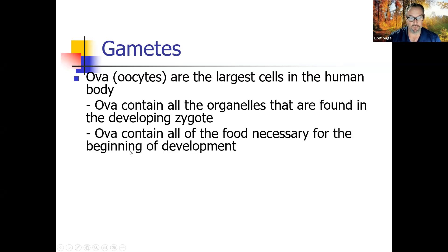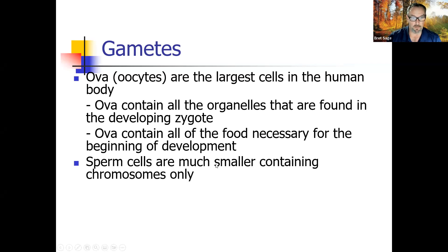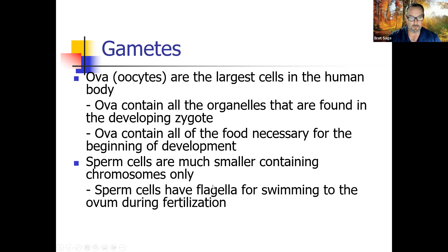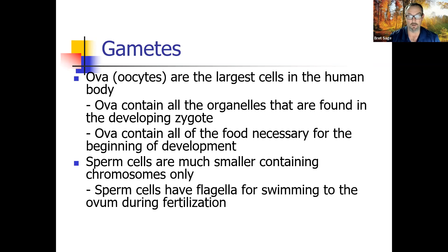Ova contain all the food necessary for the beginning of development — from release at the ovary until implantation in the uterus. Sperm cells are much smaller, containing chromosomes only, because they need to be light to swim upstream against the flow of uterine and abdominal fluid — very much like salmon swimming upstream to spawn. Sperm cells have flagella for swimming, going against a current generated by cilia inside the fallopian tube.